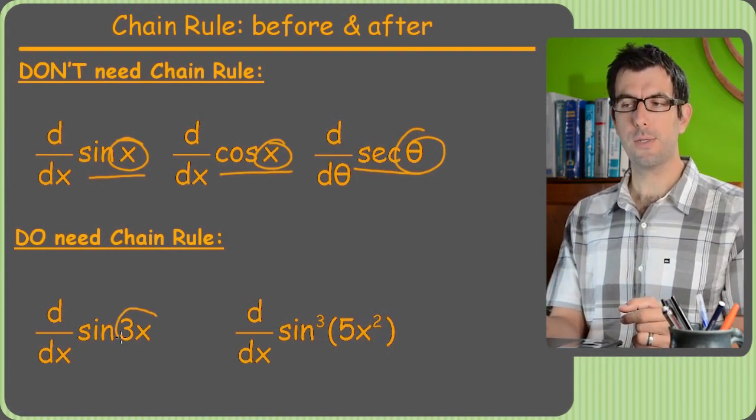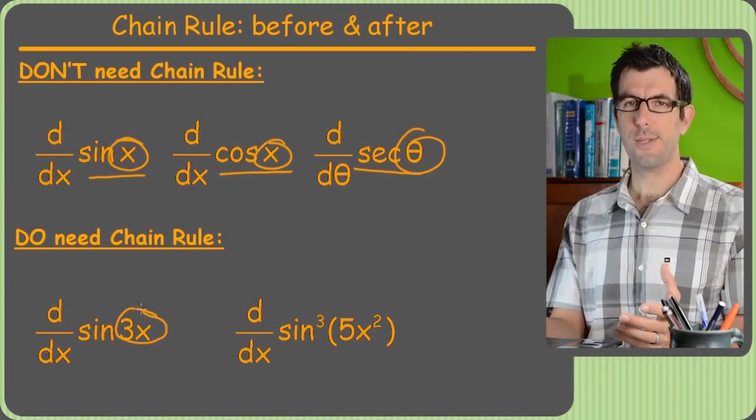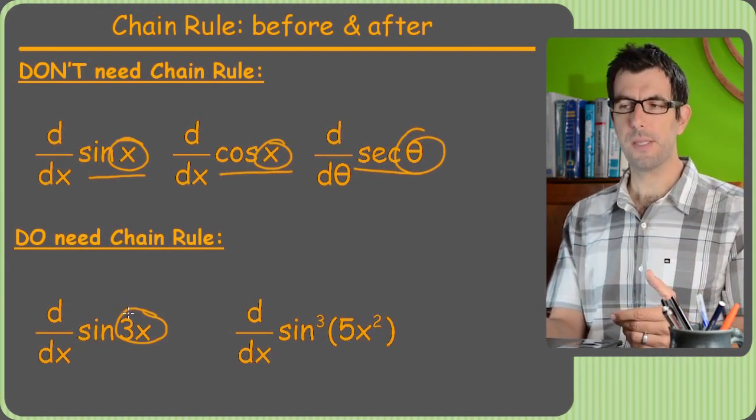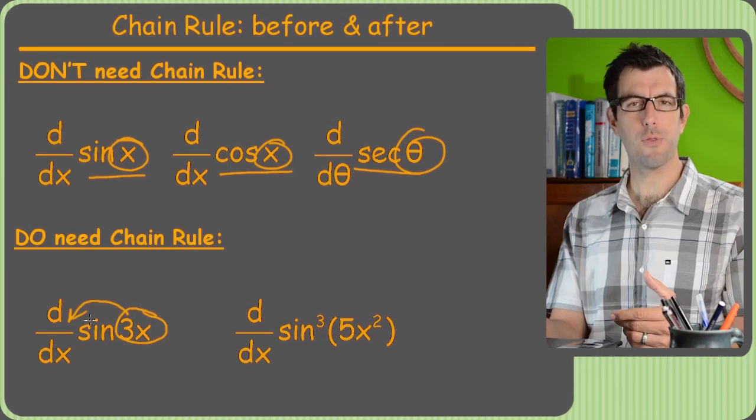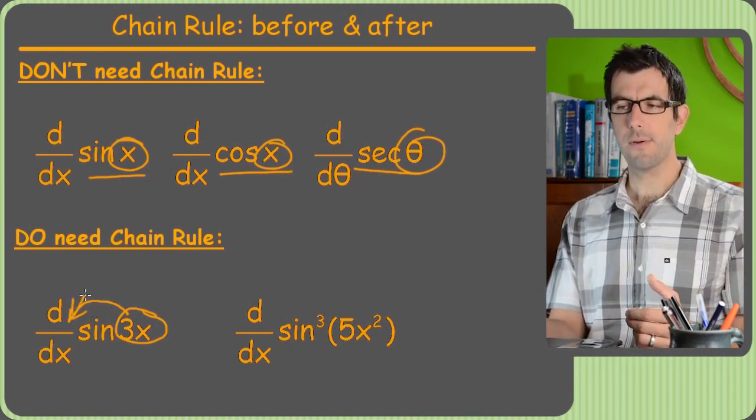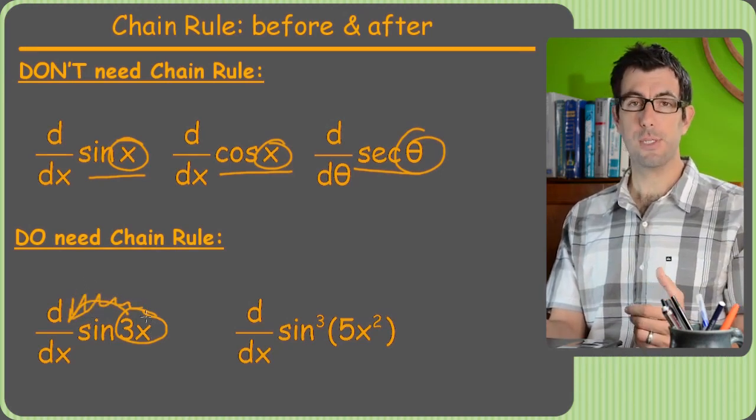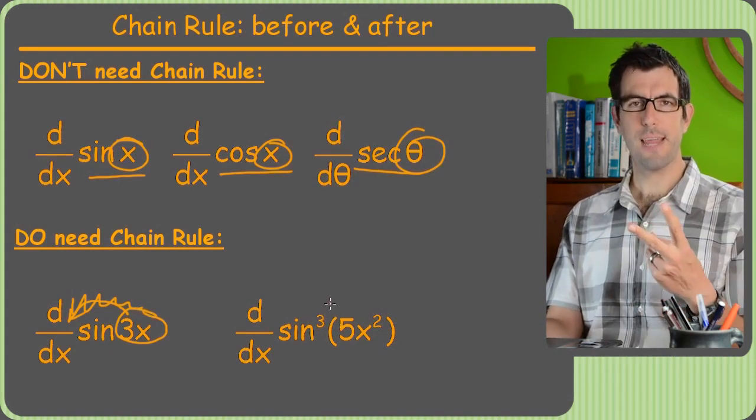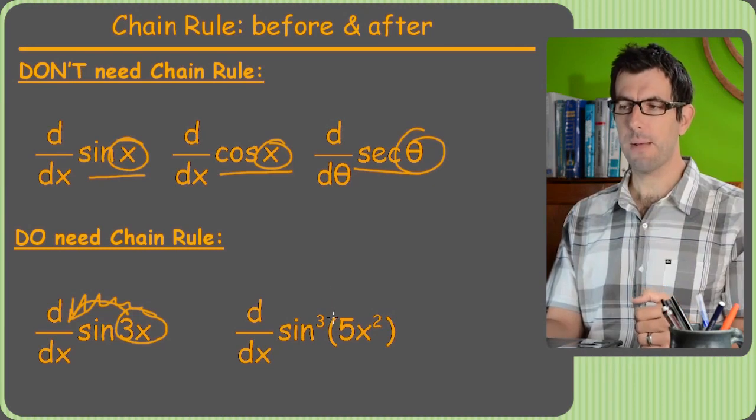With the chain rule now we can do 3x which I know didn't seem like a big deal. Common mistakes students make is that they want to just take the 3 out, kind of like factor out the 3. But that's not legal. So it turns out you actually do need the chain rule for this thing.